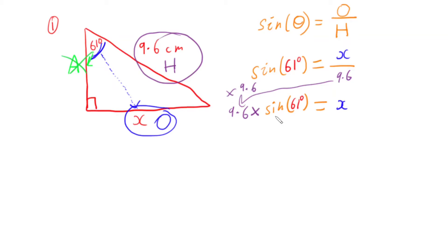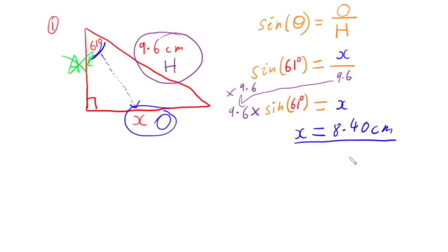I can type this into my calculator: 9.6 times sine of 61. I don't need to put the degree symbol in. That tells me our unknown side X, our opposite side, is approximately 8.40 centimetres. So I've now got my unknown side by working out what sides I have, picking the correct ratio, substituting in, and solving.